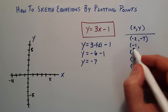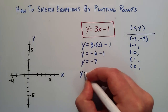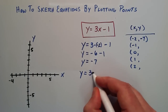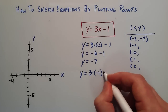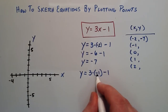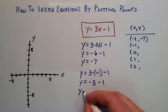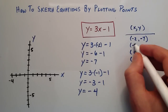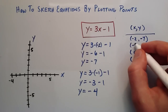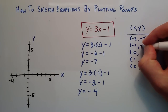Now let's look at when x is equal to negative 1. y equals 3x minus 1, so y equals 3 times negative 1, minus 1. 3 times negative 1 is negative 3, so y equals negative 3 minus 1, which is negative 4. The corresponding y value for x equals negative 1 is negative 4.